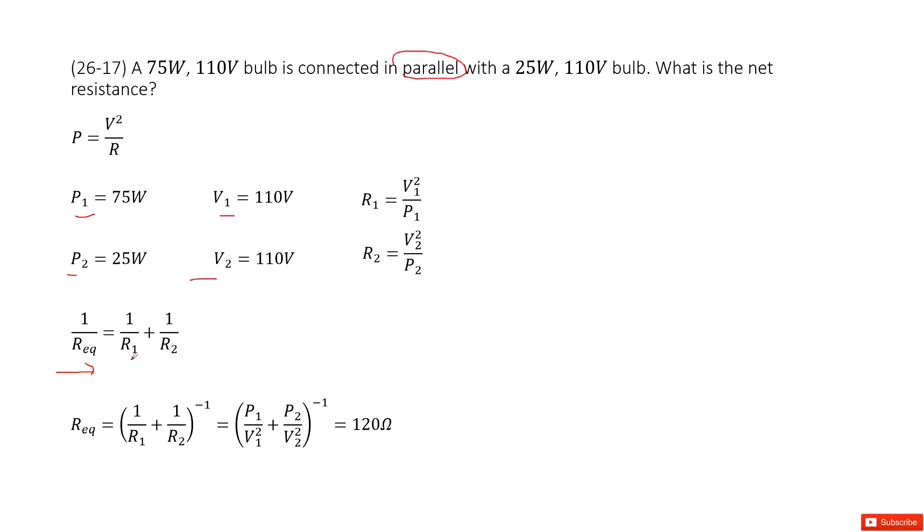So, looks like we need to find R1 and R2. Then we can get the R equivalent, right? How to get R1, R2? Look at the power equation. We can see the power equals V squared divided by R. So, very easily, we can get R1 equal to V1 squared divided by P1, R2 equal to V2 squared divided by P2, right?